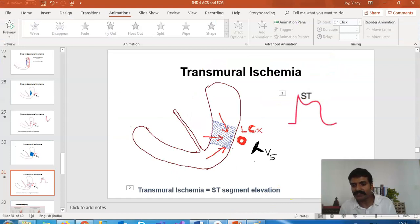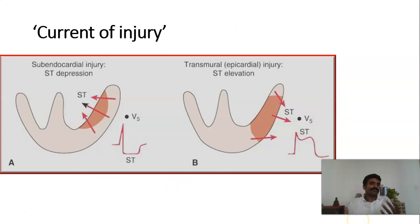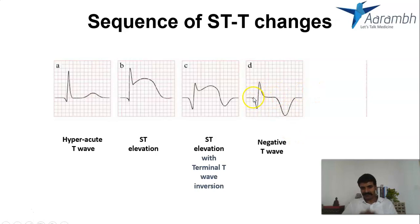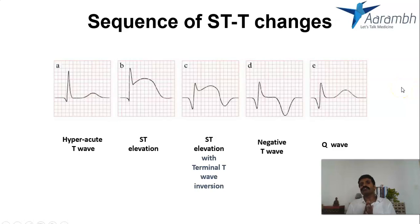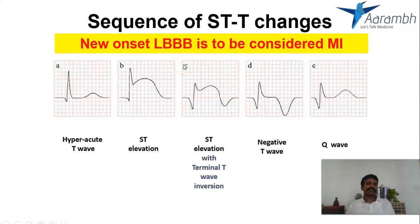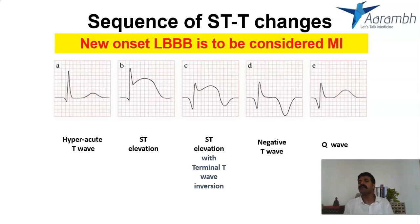To summarize the sequence of STT changes in ischemic heart disease: hyperacute T waves appear first (within hours), then classic ST elevation, followed by ST elevation with T inversion (hours to days, sign of recovery), and finally deep Q waves (days to months, sign of old infarct). You will see hyperacute T waves and ST elevation in the emergency, ST with T inversion in the ICU over the next few days, and Q waves when the patient returns to the OPD months later. Also remember: a new onset left bundle branch block should be considered equivalent to a myocardial infarction.